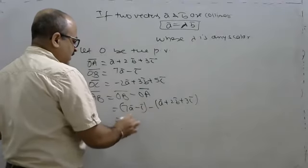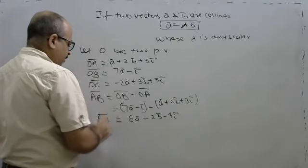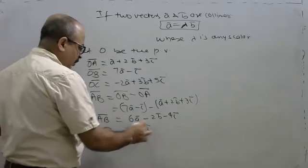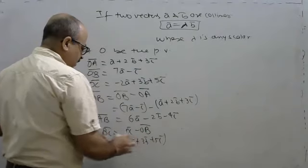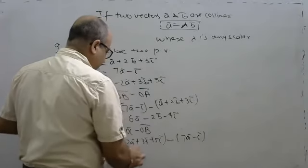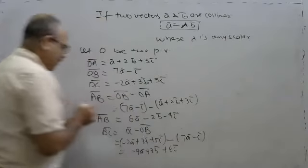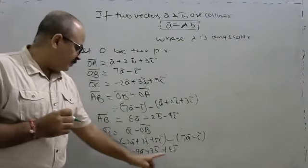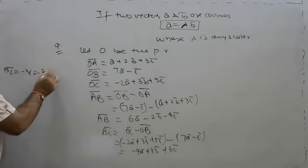So vector AB gives 6A minus 2B. Now vector BC equals OC minus OB, which is minus 2A plus 3B plus 5C, minus 7A minus C, giving minus 9A plus 3B plus 5C plus 6C. So vector BC equals minus 3A plus 2C, times some scalar factor.